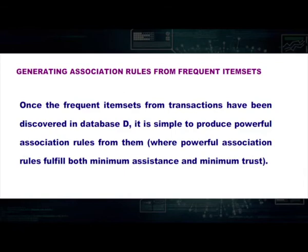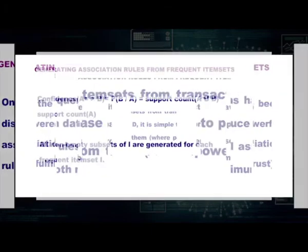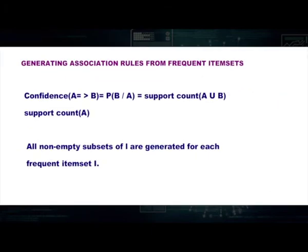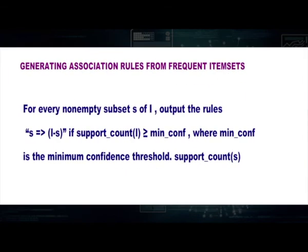To generate association rules from frequent item sets: once frequent item sets from transactions in database D have been discovered, it is straightforward to produce strong association rules. Confidence of A → B is given by the support count of A union B divided by the support count of A. For each frequent item set I, all non-empty subsets are generated, and for every non-empty subset S, the rule S → (I minus S) is output if the support count of I divided by support count of S is greater than or equal to minimum confidence.